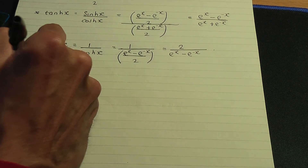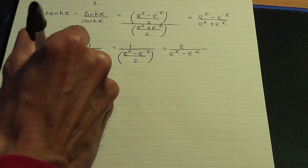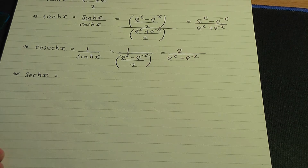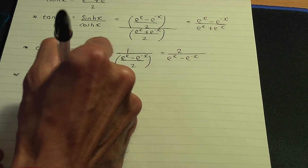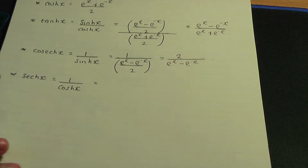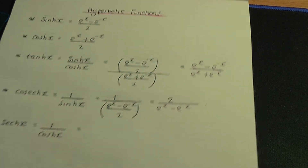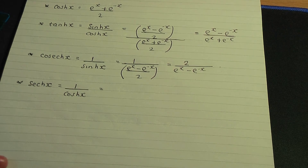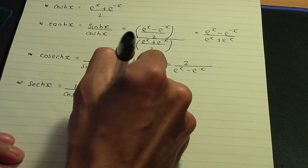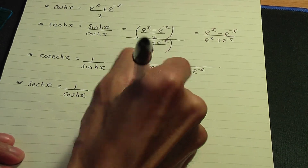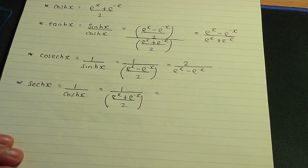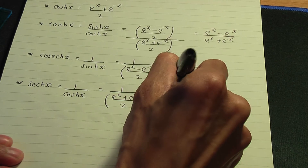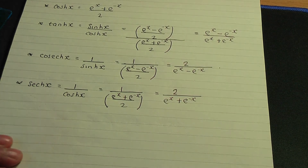The next result is hyperbolic sec. Trigonometric sec is 1 over cosine. Substituting the definition of hyperbolic cosine gives 1 over (e^x + e^(−x)) / 2, which simplifies to 2 / (e^x + e^(−x)). That is the definition of hyperbolic sec.